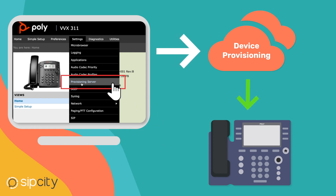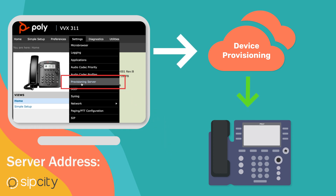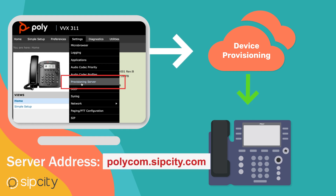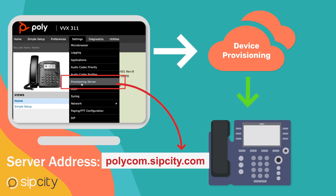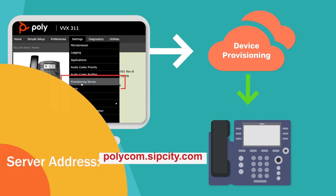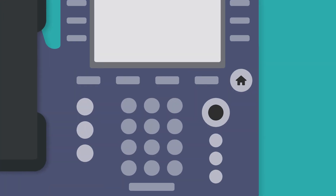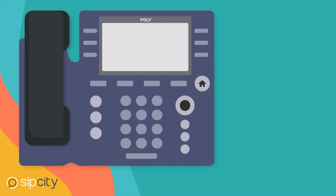To log on to the phone's web UI, you'll need the phone's IP address. You can use the phone's home key to reach the phone settings. To get to the IP address, select 4 for Status, 2 for Network, and 1 for the IP address.